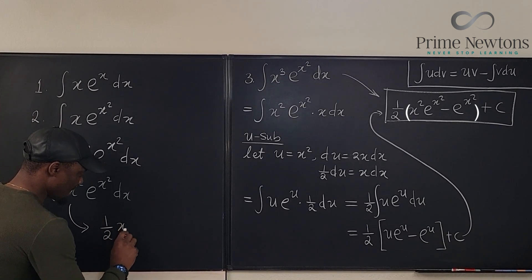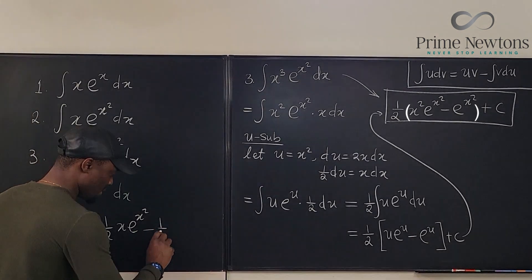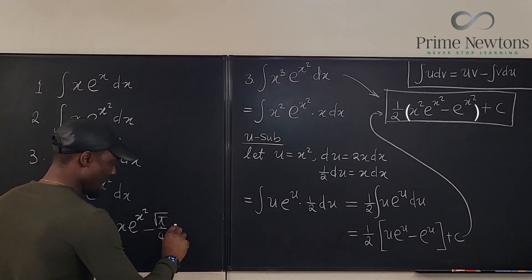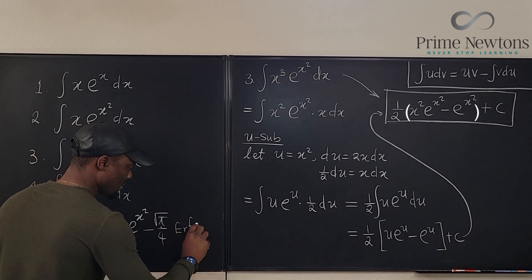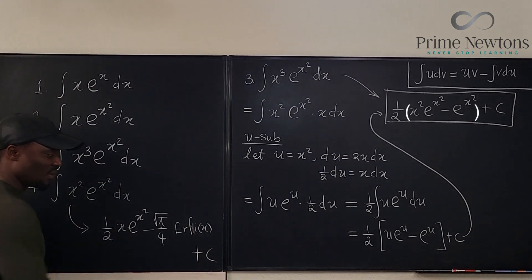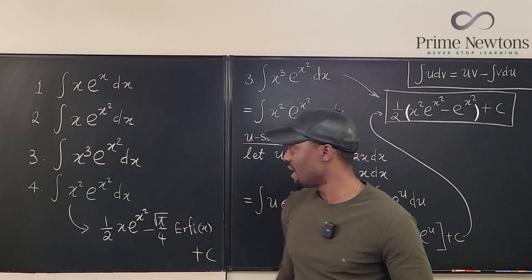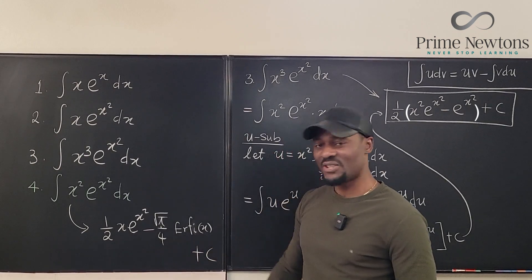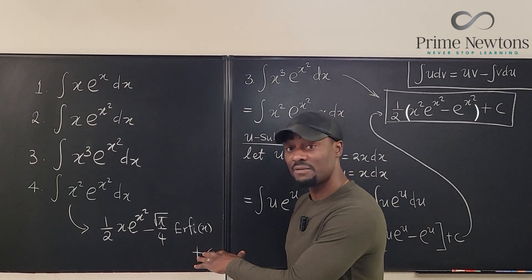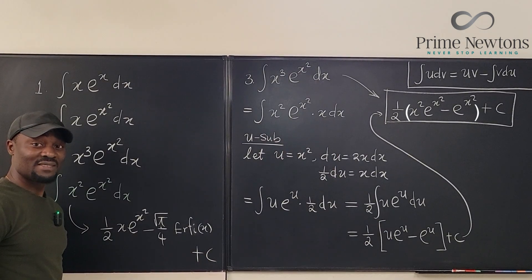The answer to this integral is one half·x·e^(x²) minus one fourth·√π times erf(x) plus C, where erf denotes the error function. This looks intimidating, but I'll make a dedicated video explaining what the error function is and how to use it. Never stop learning — those who stop learning stop living. Bye!